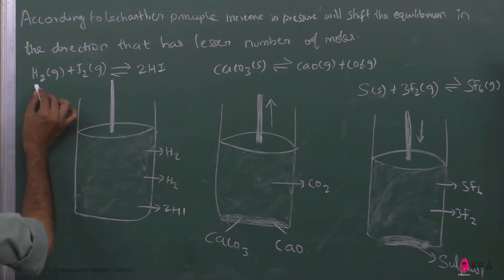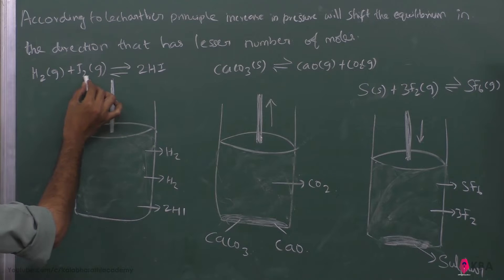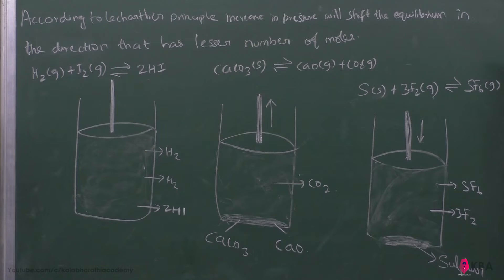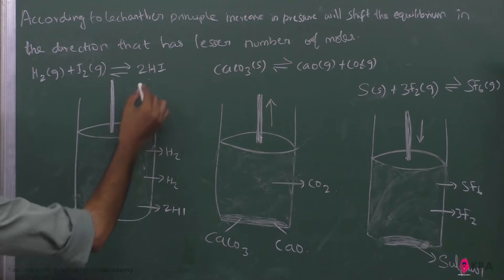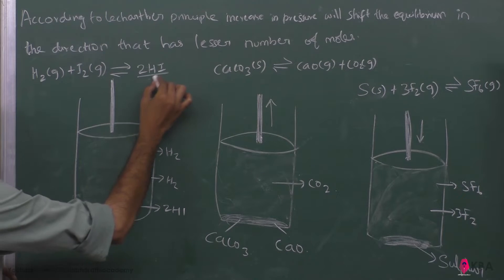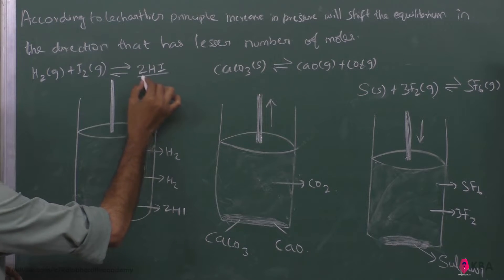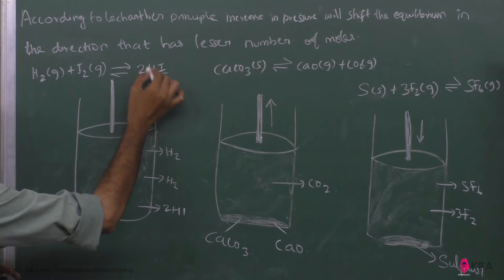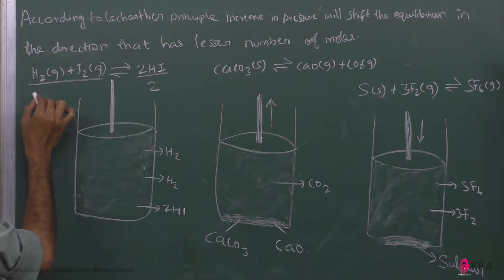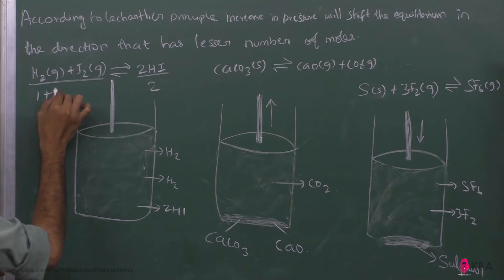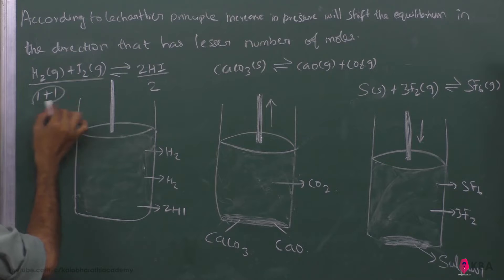For the first reaction, H₂ + I₂ → 2HI: what is the lesser number of moles? On the product side we have 2HI, which is 2 moles. On the reactant side, hydrogen is 1 mole and iodine is 1 mole, so 1 plus 1 equals 2 moles.